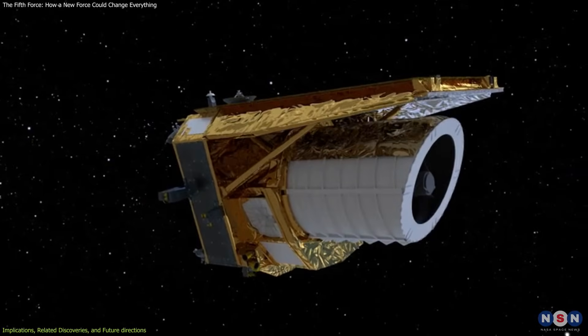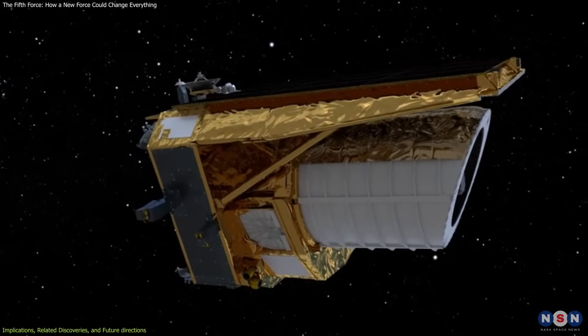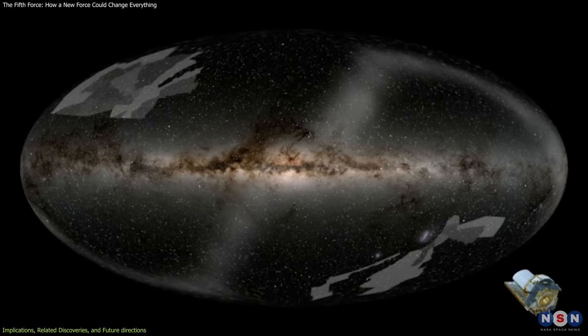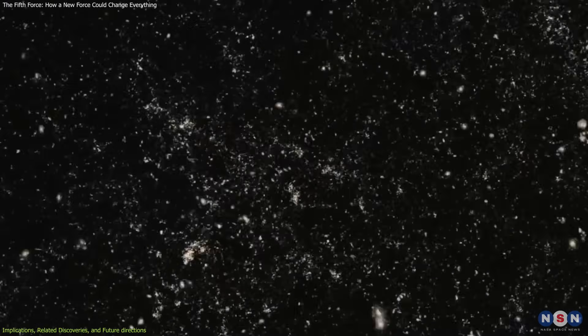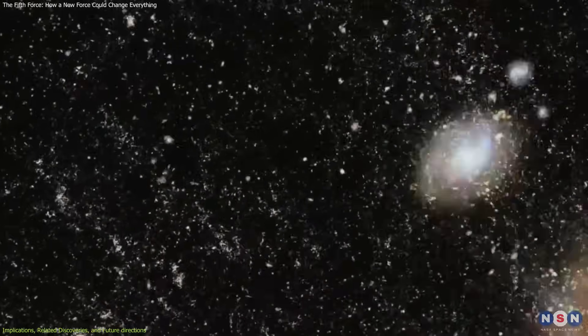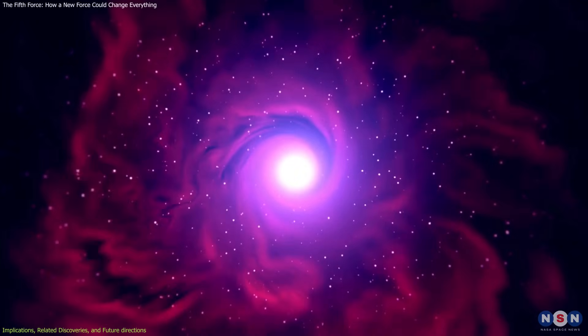The Euclid telescope, designed to study dark energy and dark matter, aims to map billions of galaxies and their distributions. This data could reveal deviations from expected gravitational behavior, offering indirect evidence of a fifth force.